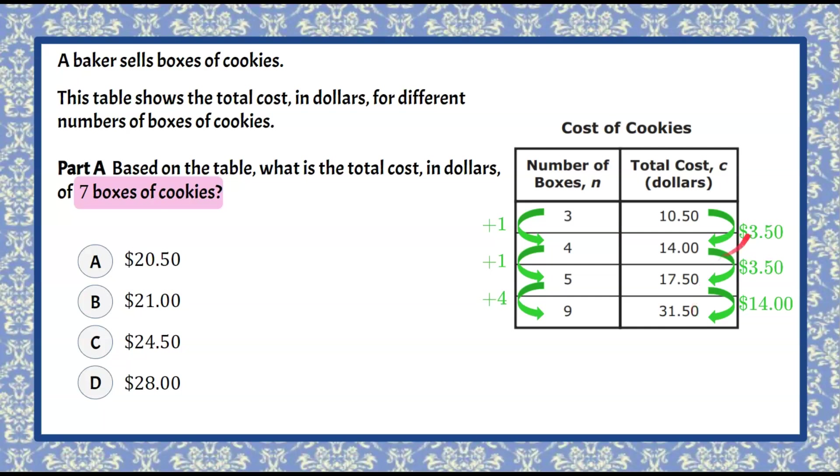So once again when we increased by one it was three dollars and fifty cents for an additional box. When we increased by four it was an increase of fourteen dollars. So you could find this fourteen dollars by subtracting thirty one fifty and seventeen fifty. Another way to look at it is three dollars and fifty cents times four should add fourteen dollars.